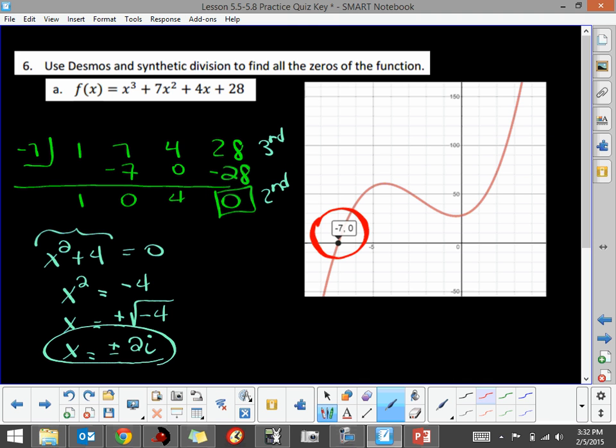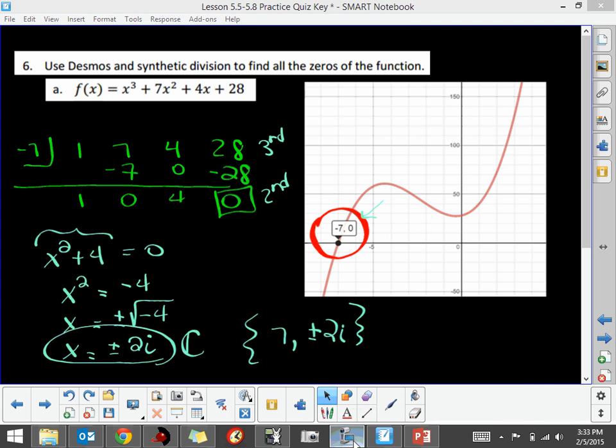So there's our two truly complex or pure imaginary roots. We had one real root at our negative 7 that we have here. So all in all, we found the three roots. So just to list them, we would have the zeros of negative 7 and plus or minus 2i.